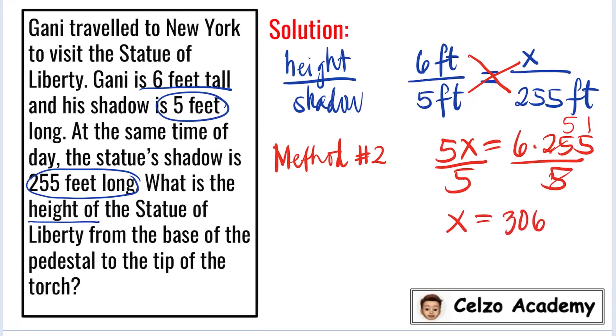So the value of X is 306 feet, and this is a valid answer. The actual height of the Statue of Liberty is 305 feet and 6 inches.